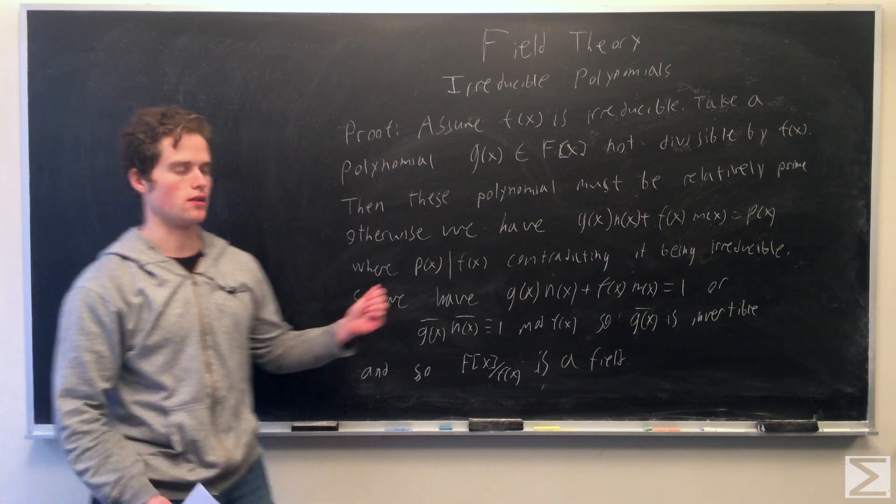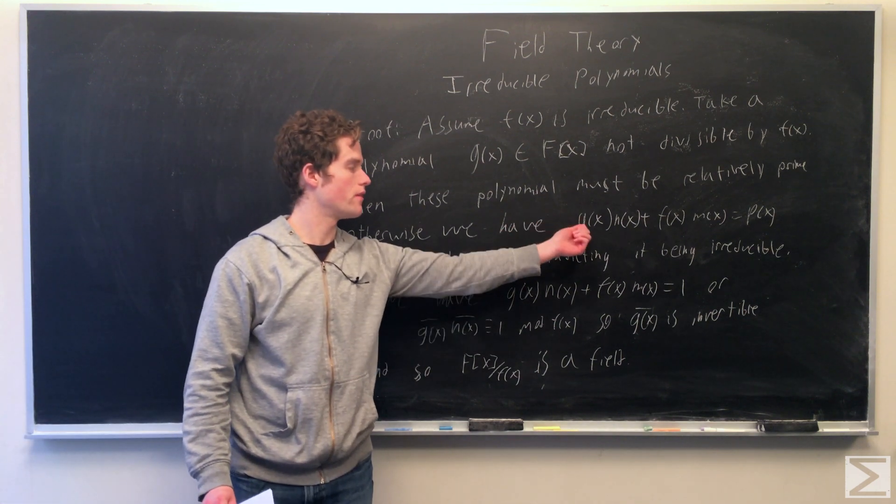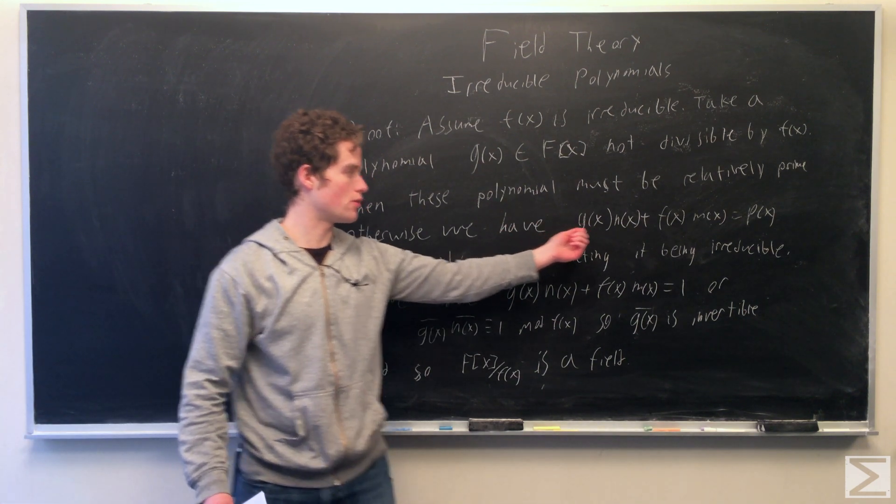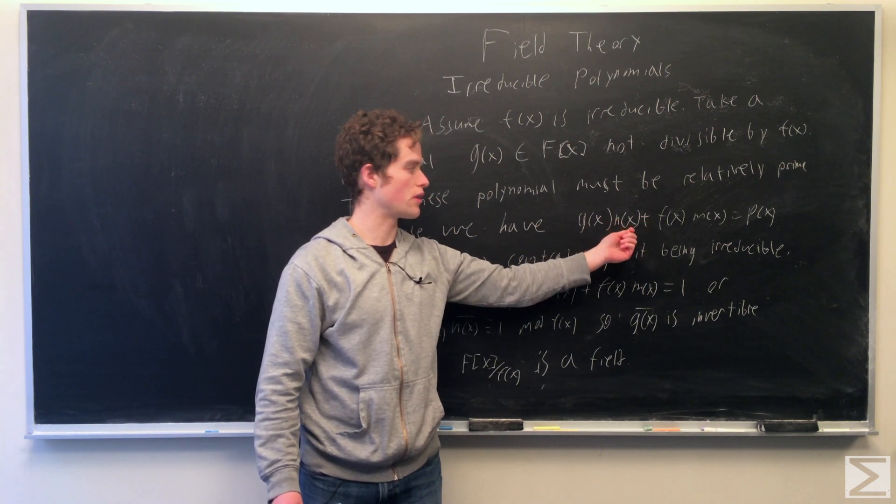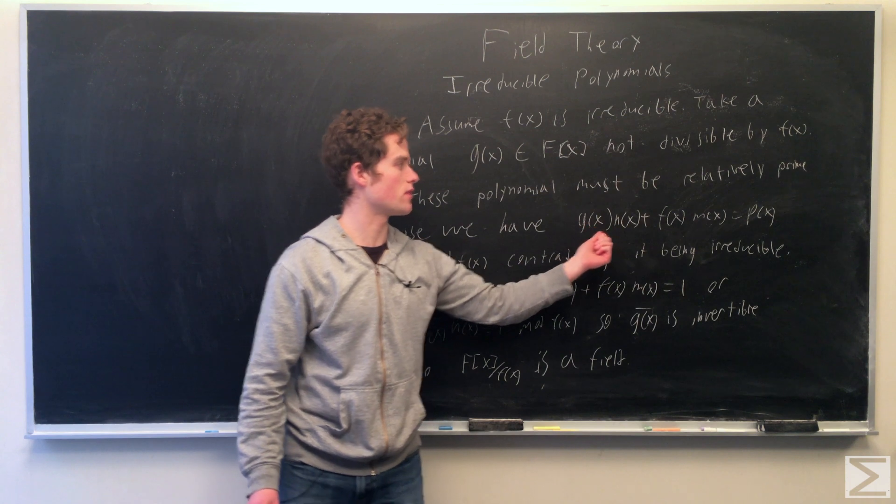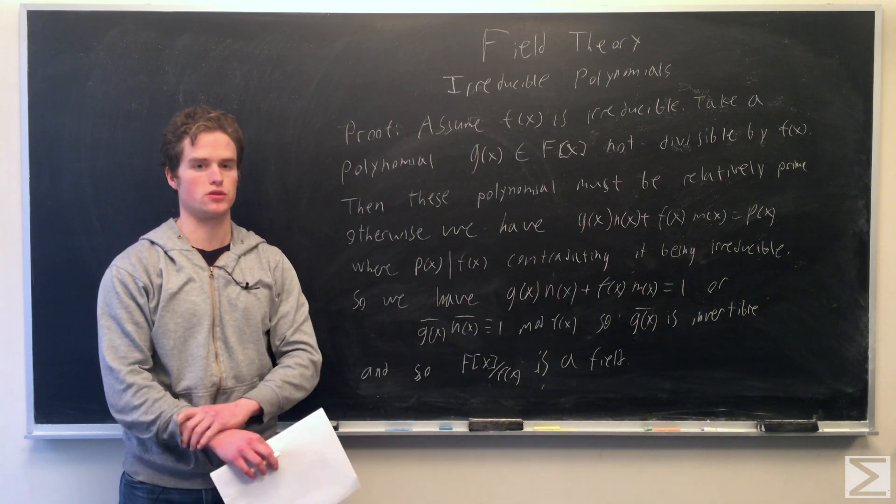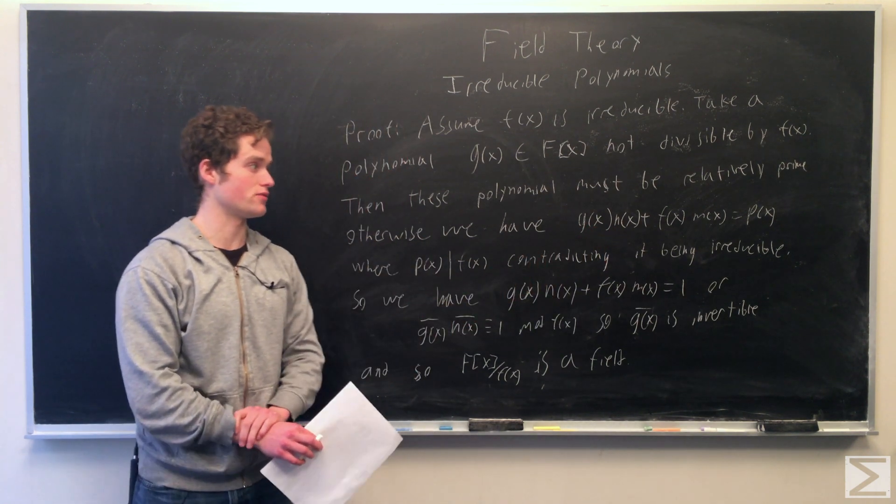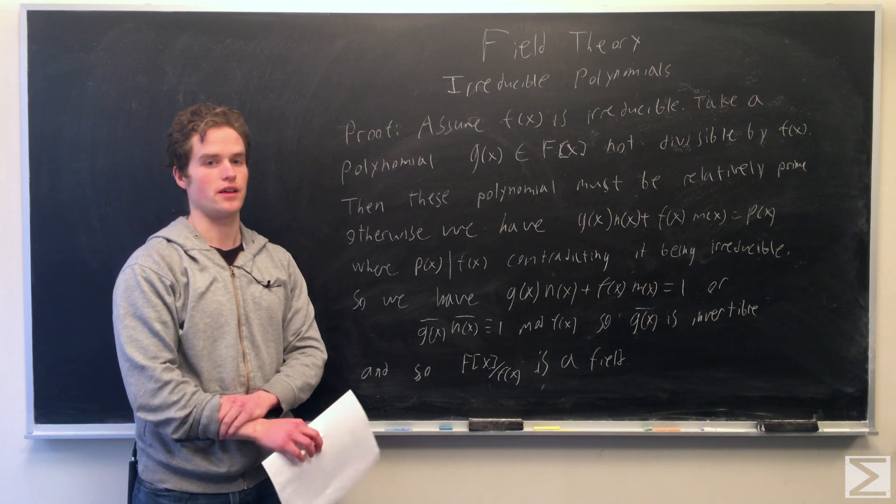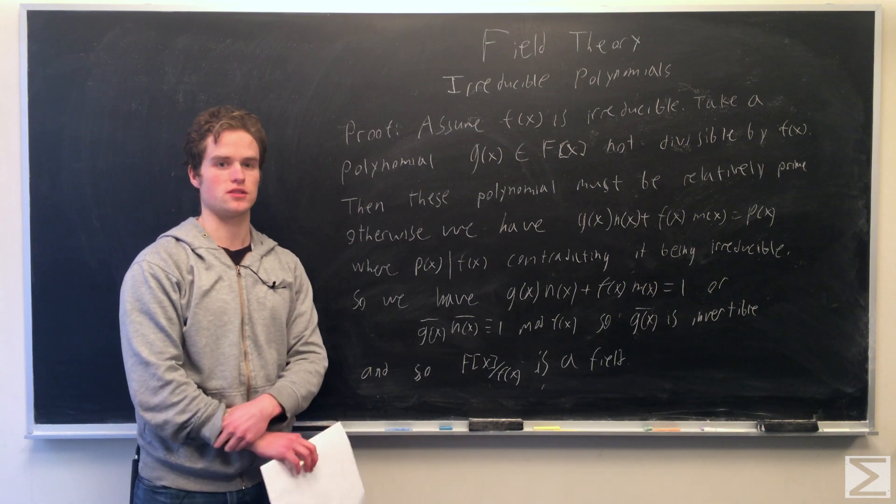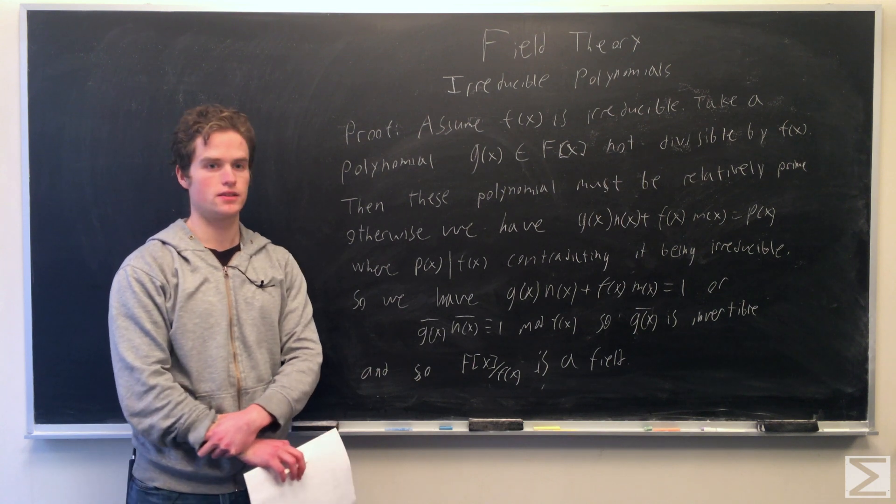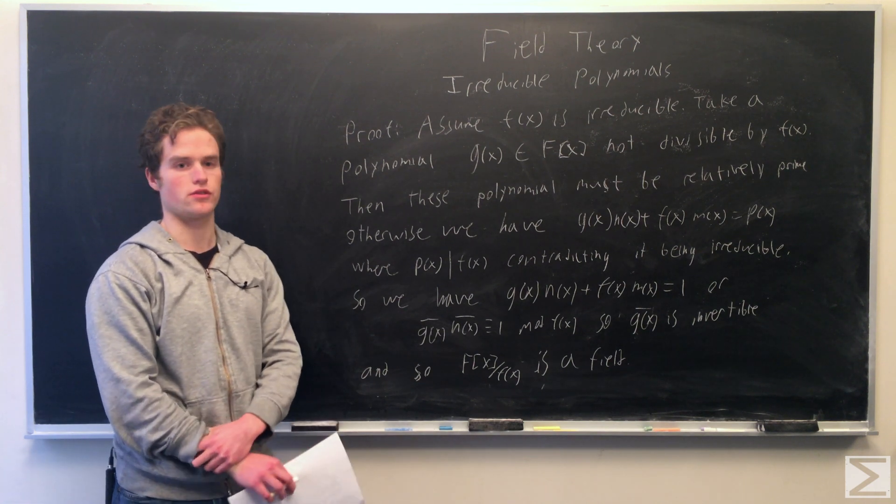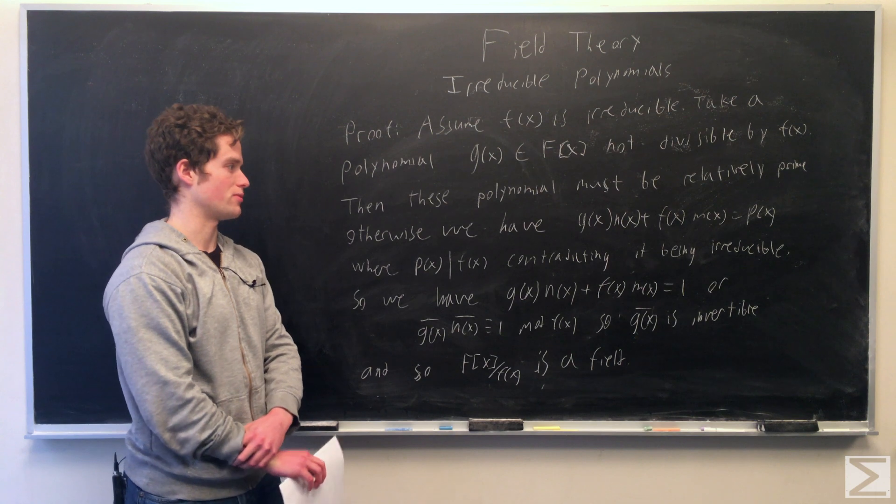Otherwise, using the division algorithm, we can find polynomials n of x, m of x in the ring of polynomials such that g of x n of x plus f of x m of x equals the greatest common divisor of g of x, f of x. And that would be a polynomial with coefficients in F which divides f of x. And that would contradict f of x being irreducible, so they must be relatively prime.